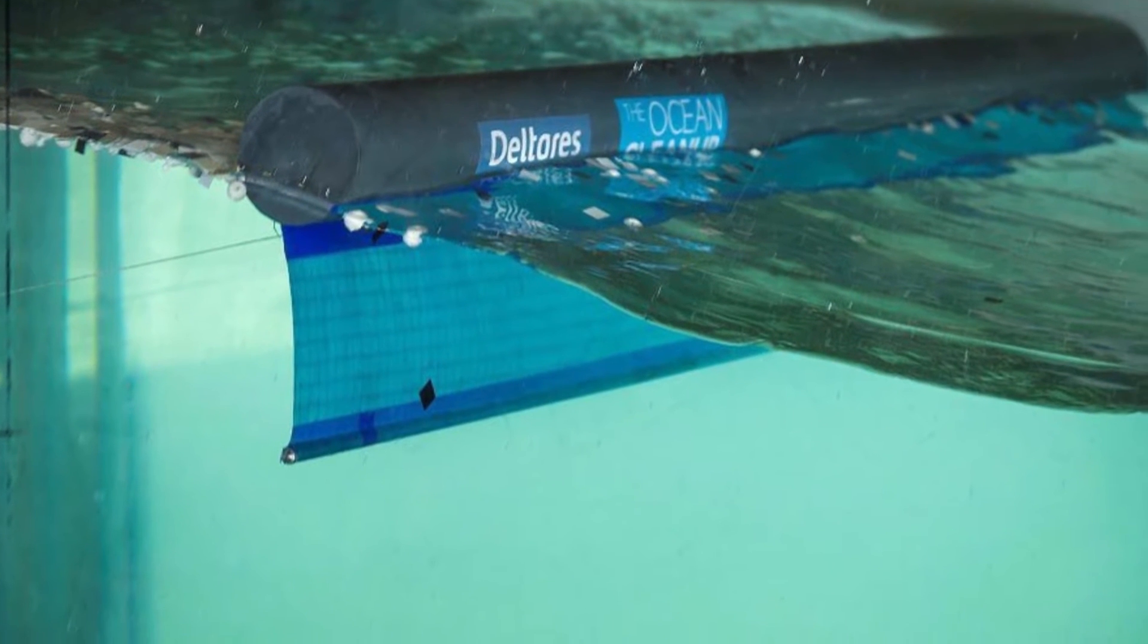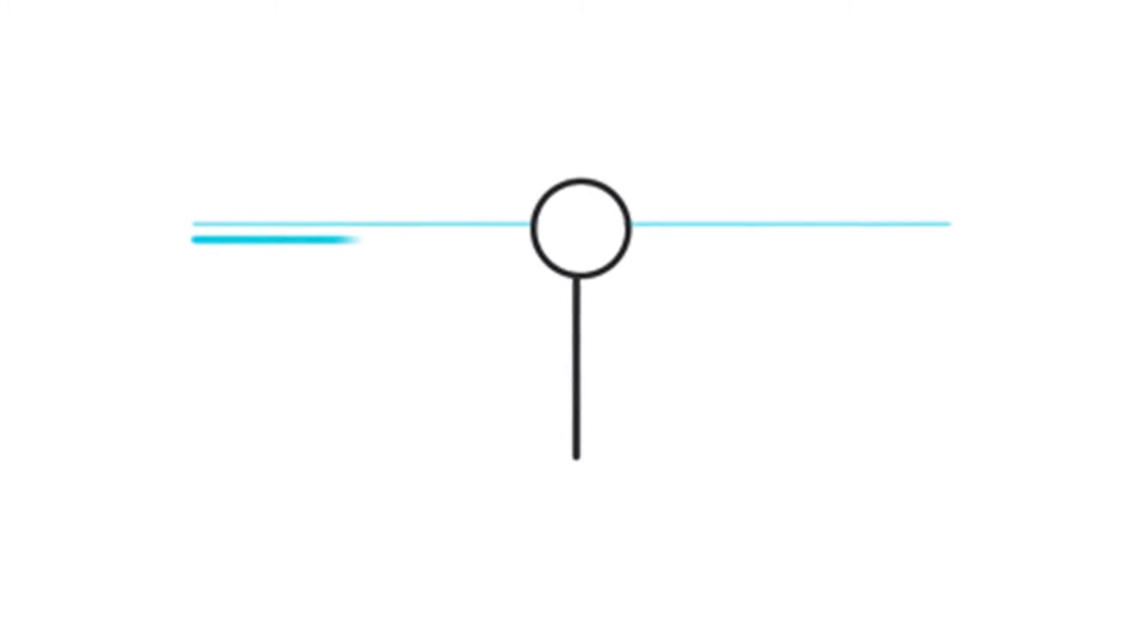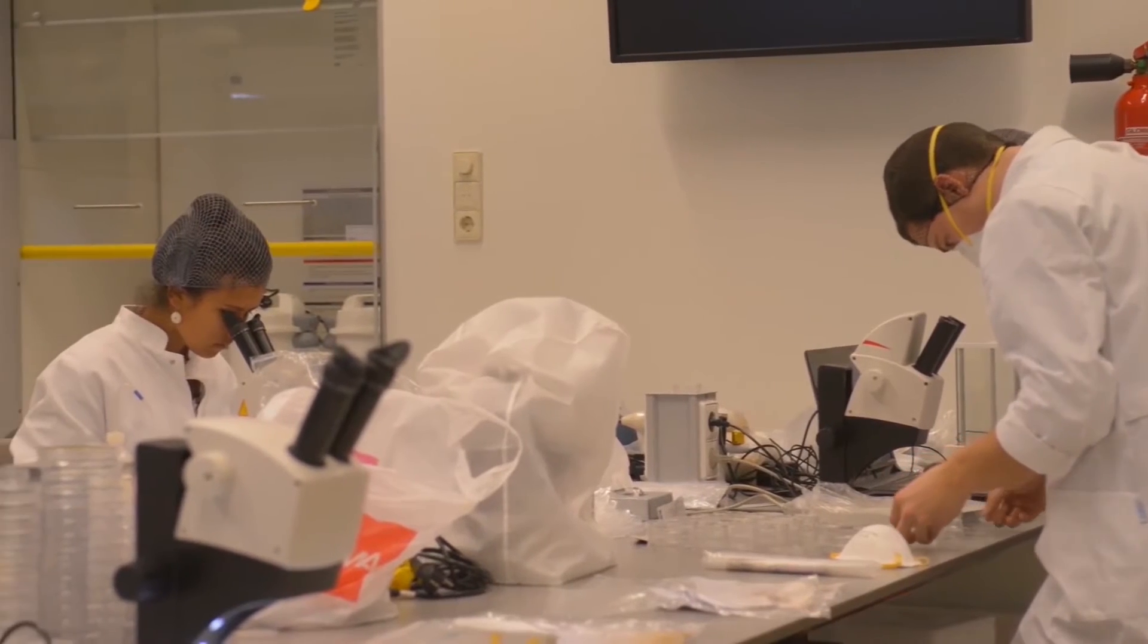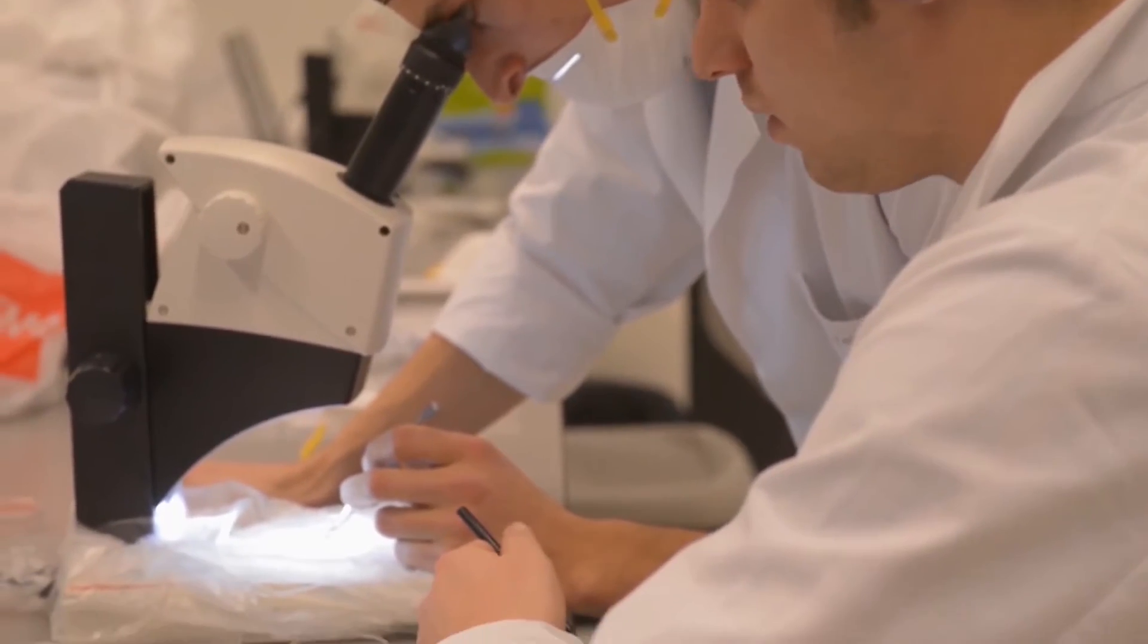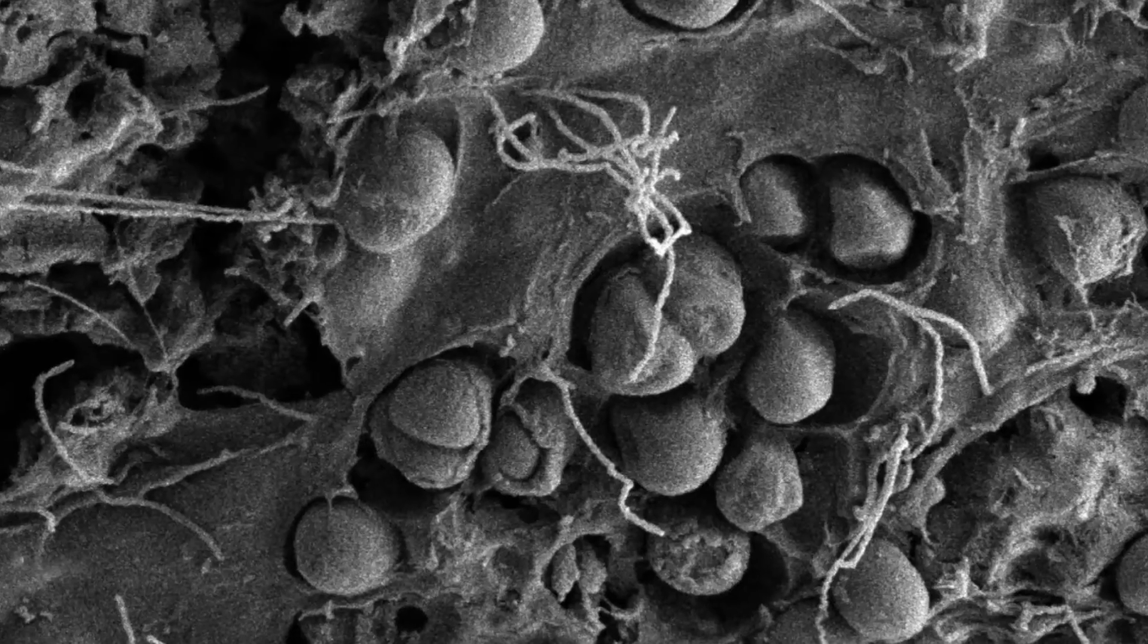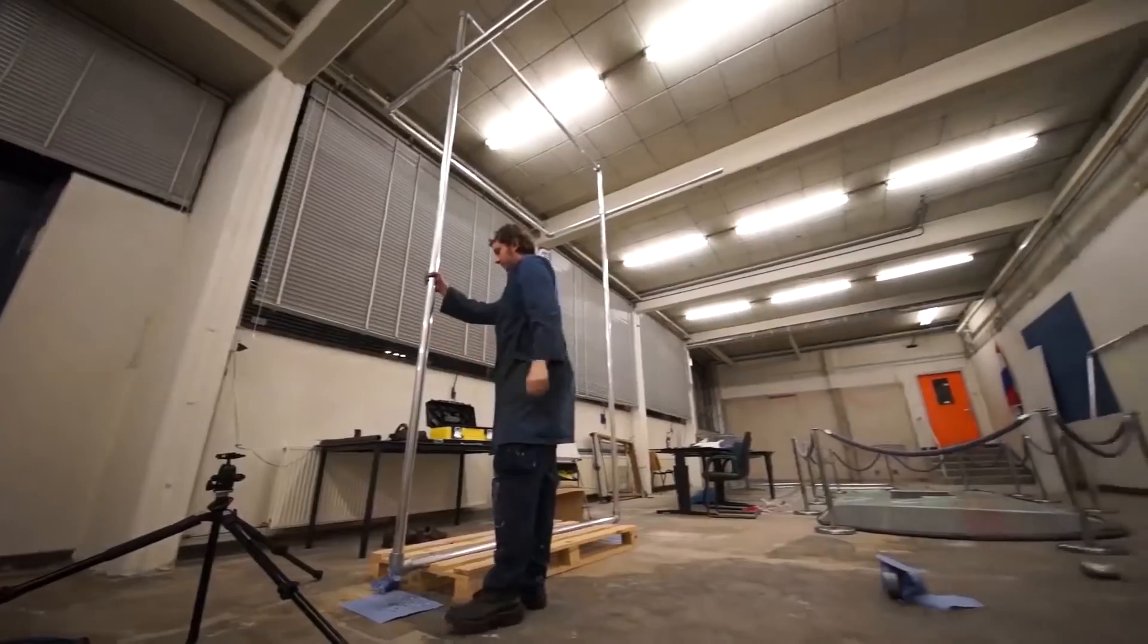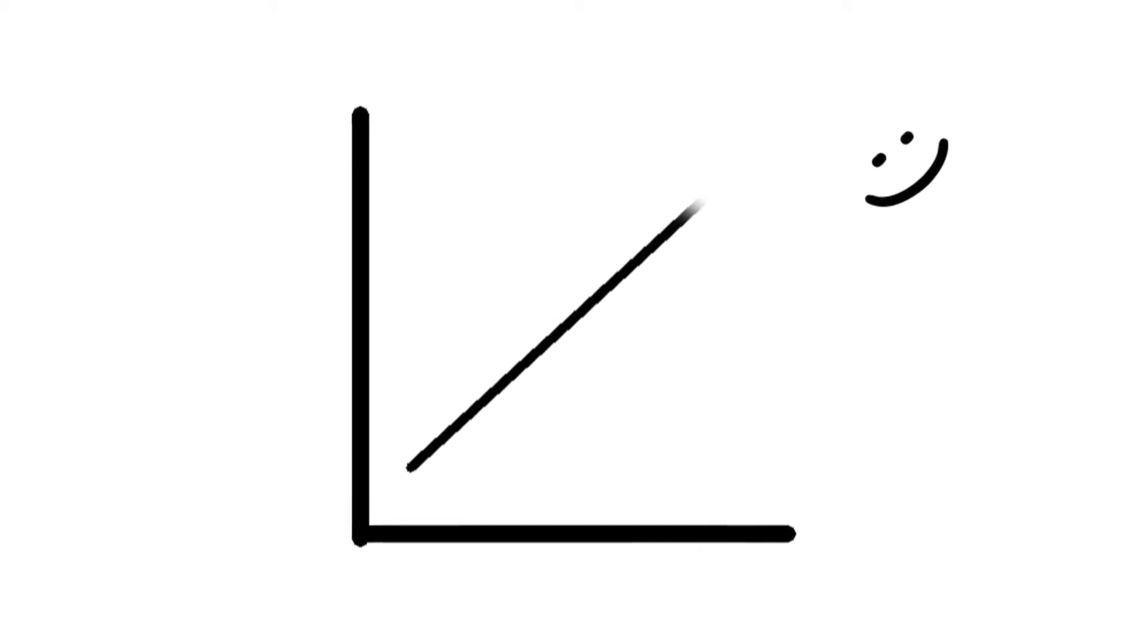Screens beneath these barriers will allow water to pass underneath, carrying all sea life while capturing the less dense plastic. But simply collecting the plastic isn't enough. We can take this even further by using naturally occurring bacteria that can eat plastic. Adding these microbes to the barriers will drastically increase their efficiency.